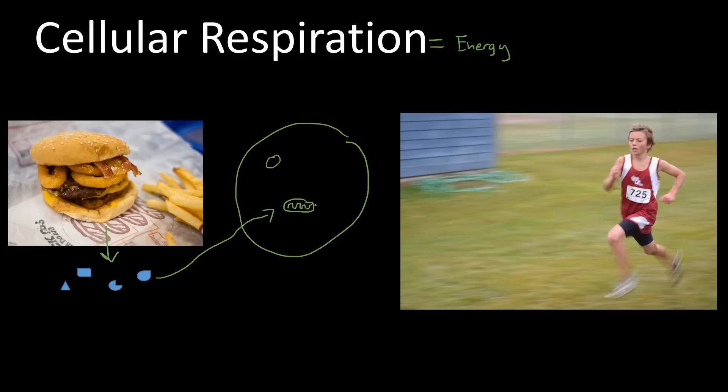The mitochondrion is going to then process those food molecules and produce a product called ATP. And ATP is a form of cellular energy. It can power muscles, it can power active transport, it can power all sorts of things. That ATP, in this case, is going to be used to move the muscles in this runner. So cellular respiration is actually a chemical process that occurs within the mitochondria to convert food molecules into usable energy.